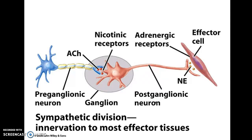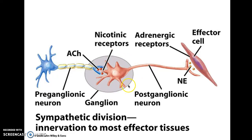Here is a cartoony picture of the sympathetic division of the autonomic nervous system. We have our preganglionic neuron with its cell body located in the thoracolumbar region of the spinal cord. This is our preganglionic fiber going to the ganglion, and then the postganglionic neuron, whose cell body is located in the ganglia. The preganglionic neuron communicates with the postganglionic neuron using acetylcholine. The postganglionic neuron sends an axon to the effector, and in most cases in the sympathetic division, norepinephrine is the neurotransmitter used there.